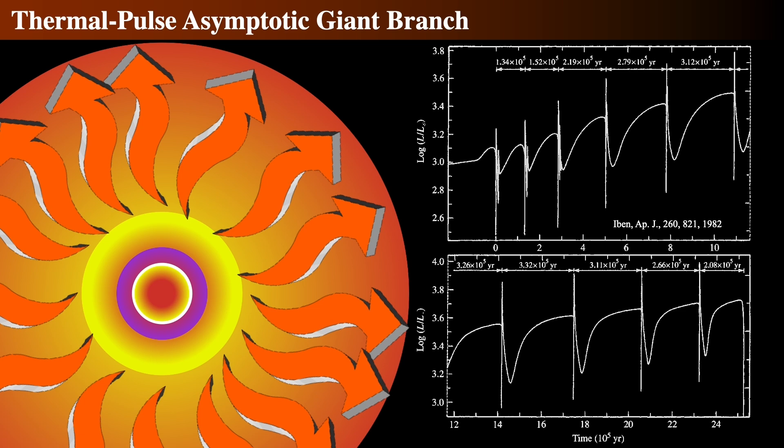The time between each pulse depends on the mass of the star. Higher-mass stars, around 5 or so solar masses, can do pulses every few thousand years. But low-mass stars, down to about 60% of a solar mass, can take hundreds of thousands of years between pulses. Importantly, each pulse is stronger than the previous.